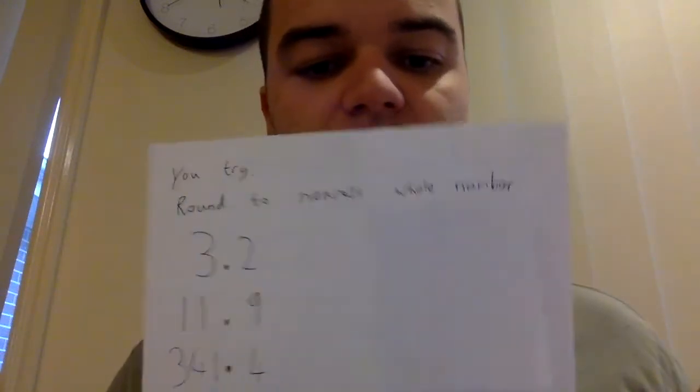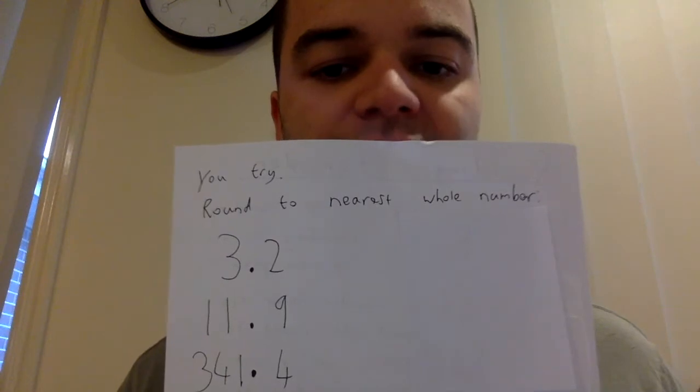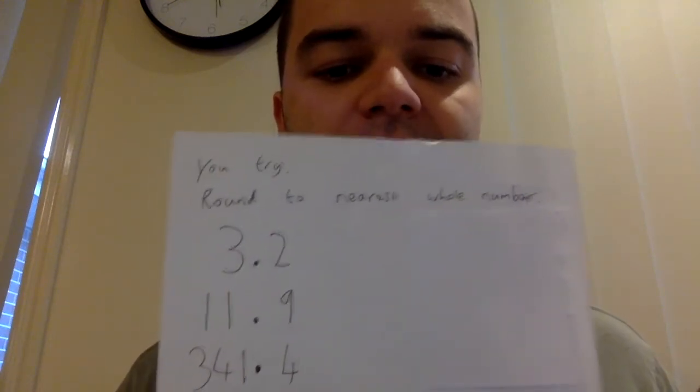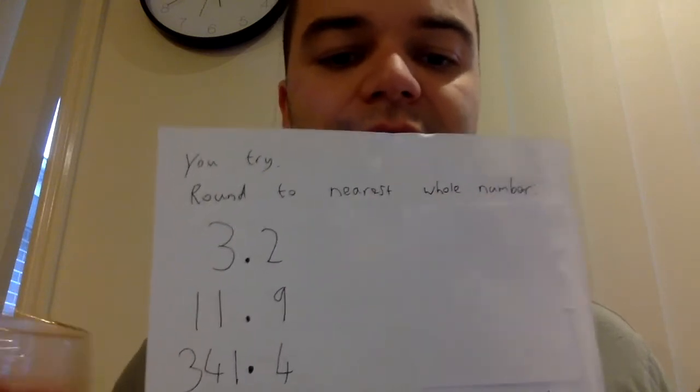So I've got some examples on the back. So you can just pause this quickly if you want to and have a quick go at rounding those three, just the nearest whole number. So rounding it to a near whole number, then I'll go through the answers to those. So you can pause it and try those quickly.